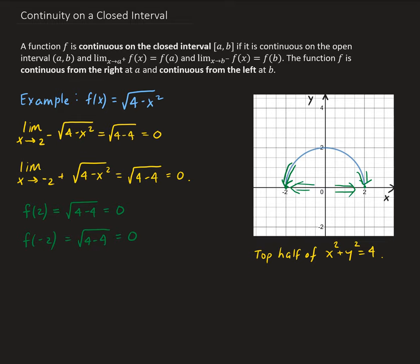Since the limit as x approaches 2 from the left of our function is equal to f(2), which equals 0, this tells us that the function is continuous from the left.